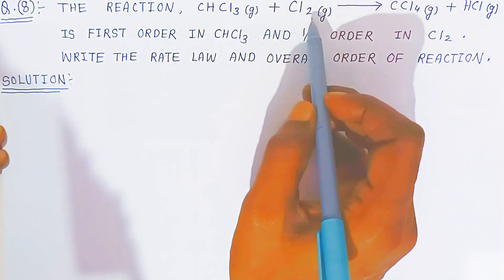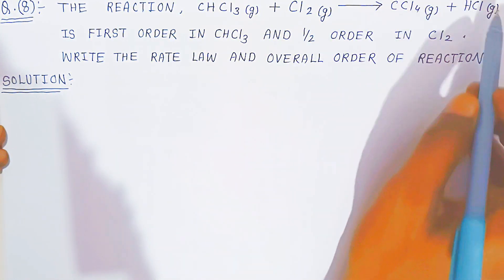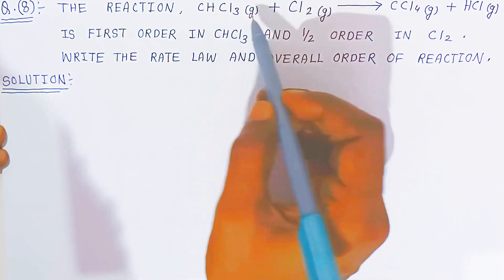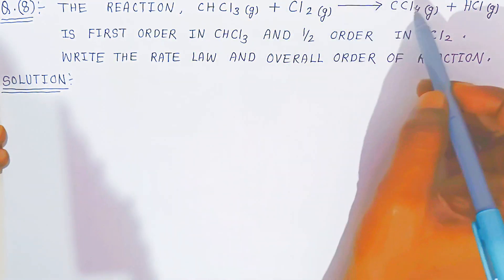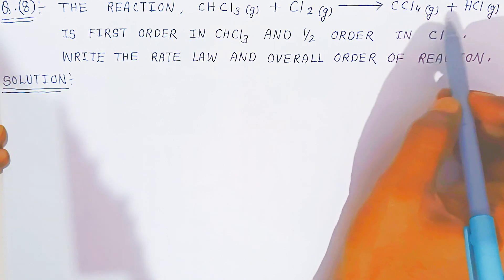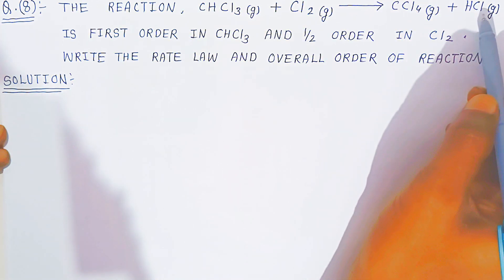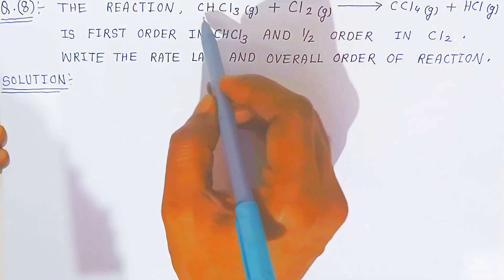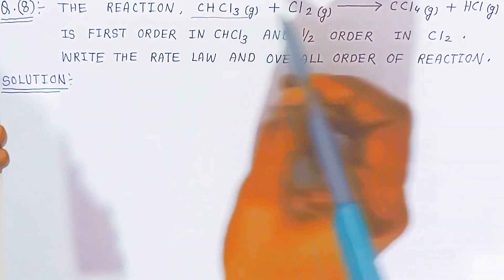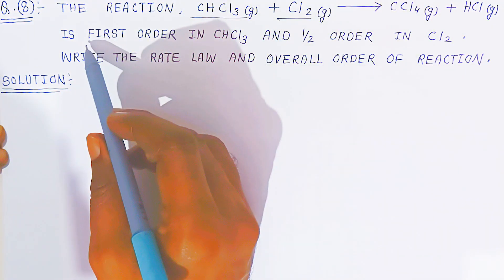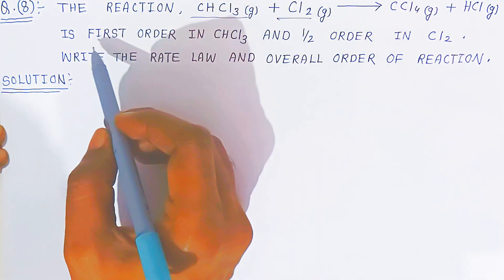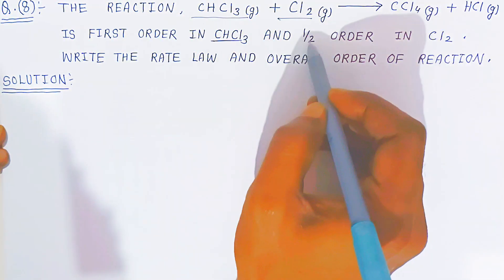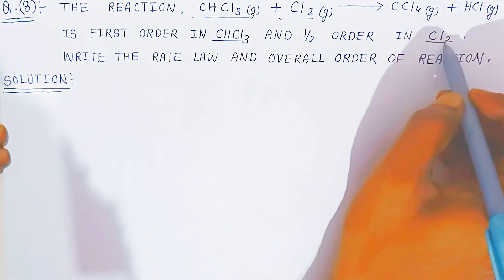These two gases are combining and producing these two gases. One mole of chloroform CHCl₃ combines with one mole of chlorine gas, producing one mole of carbon tetrachloride gas and one mole of hydrogen chloride gas. We have two reactants: chloroform and chlorine gas. This reaction is first order in chloroform CHCl₃ and half order in chlorine gas.